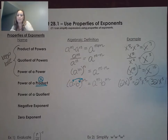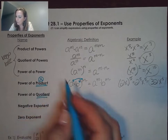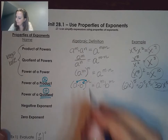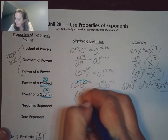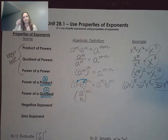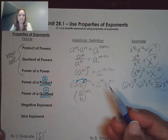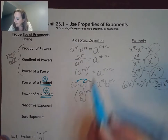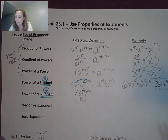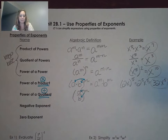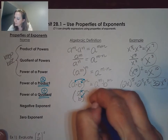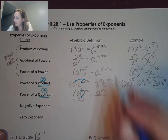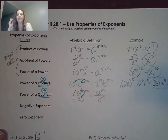Next we have the power of a quotient. A quotient means that you have division. If you have division, it might look like A over B to the nth power, because remember the fraction bar is like division. Because you have division, you are allowed to apply the exponent to the numerator and to the denominator. So this would give us A to the nth in the numerator and B to the nth in the denominator.